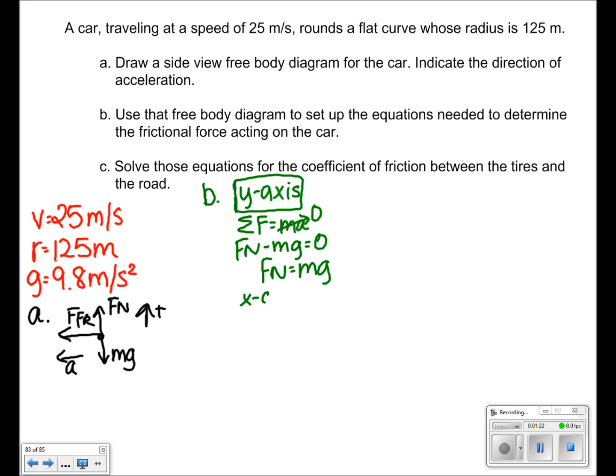In the x-axis, we have a different situation. We have sigma f equals ma. We know that a equals v squared over r. Therefore, we can plug that in. From here, our only force, the frictional force, is equal to mv squared over r.